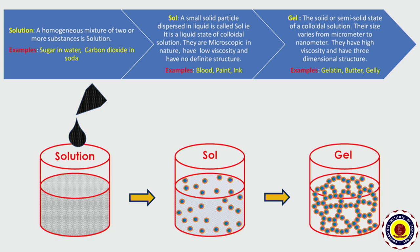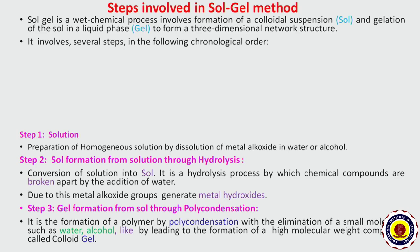The precise detail of gel: the solid or semi-solid state of a colloidal solution is gel. Its size varies from micrometer to nanometer. It has a three-dimensional structure and has high viscosity. Gelatin, butter, and jelly are a few examples.